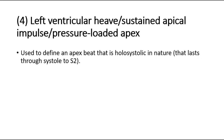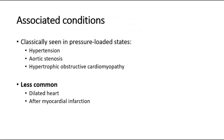The fourth abnormality is left ventricular heave, or sustained apical impulse, or pressure-loaded apex. This is used to define an apex beat that is hollow systolic in nature, lasting through systole to the second heart sound. This is classically seen in pressure-loaded states such as hypertension, aortic stenosis, and hypertrophic obstructive cardiomyopathy. Other less common causes are a dilated heart or after myocardial infarction.